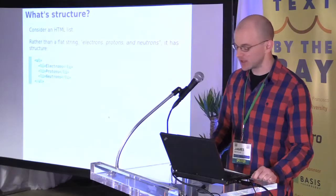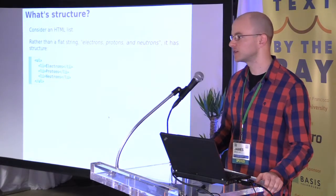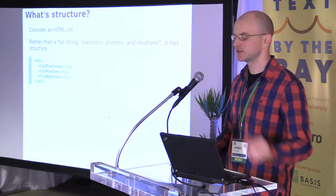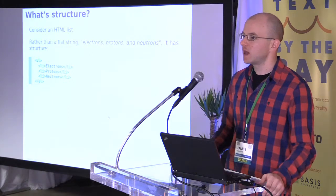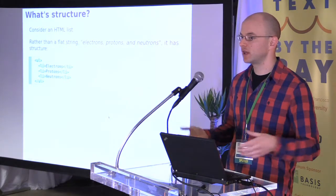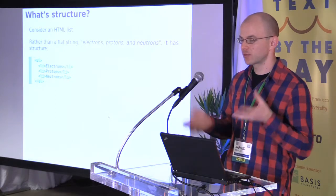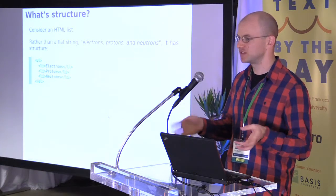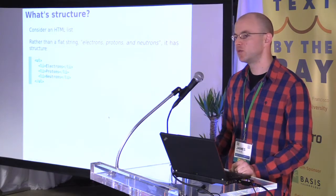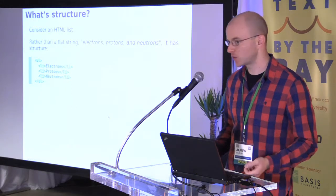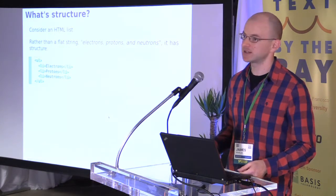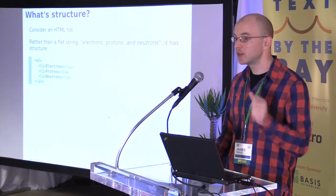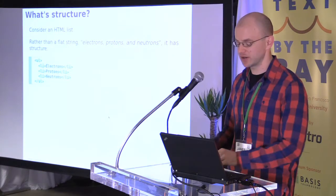Consider just a regular plain old HTML list. This lets us take an abstract idea like a list of things — which we might express as a flat string: electrons, protons, and neutrons — and allows us to put structure around it that a web browser would understand. Rather than just a string, we can tell the browser there's an unordered list with three distinct elements. The browser doesn't know what an electron is, but it knows that 'electrons' is an element in this three-item list. And that's really all we're talking about when we say structure.